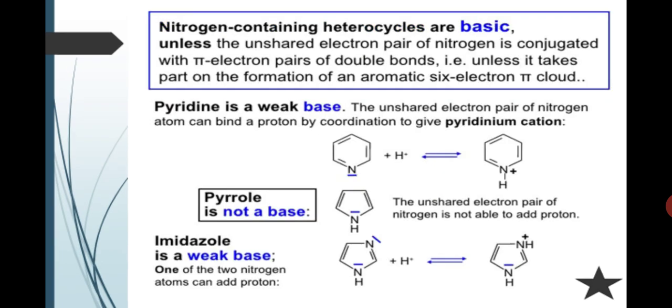Nitrogen-containing heterocycles are basic unless the unshared electron pair of nitrogen is conjugated with the pi electron pair of double bond, unless it takes part in the formation of aromatic six electron pi cloud.